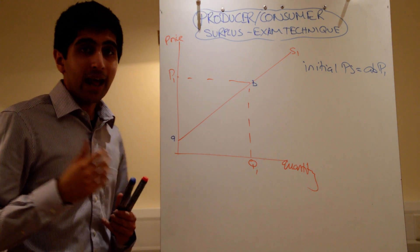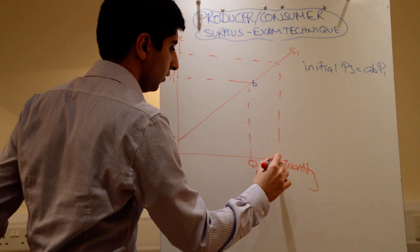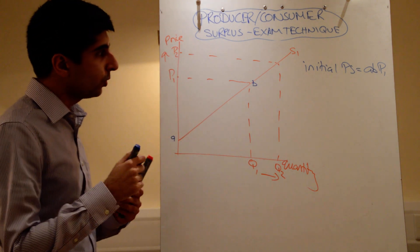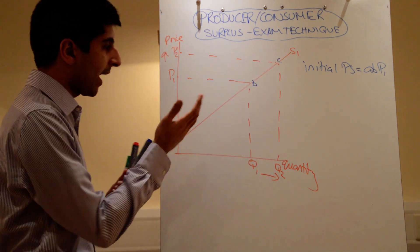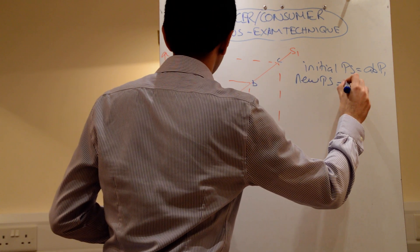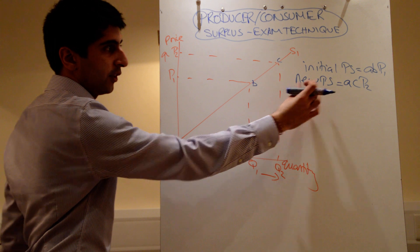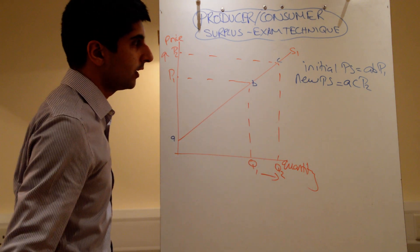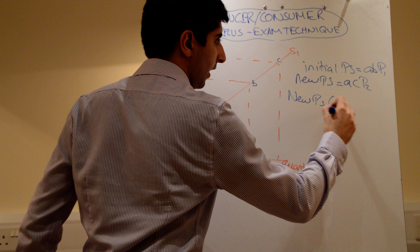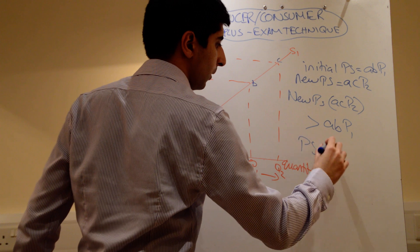Now, you're trying to say, as the price increases, what happens to producer surplus? Well, show. The price increases, let's say now, to P2. The price goes up to P2. The new consumer surplus is the area above the supply curve, but below the price. So, new producer surplus is just going to be ACP2. Three marks so far. You've done the initial producer surplus. You've done the new one now. You've labeled your curve and your axis. And then you've got to make a final comment saying, look, the new producer surplus, which is ACP2 is greater than ABP1. So, producer surplus has increased.